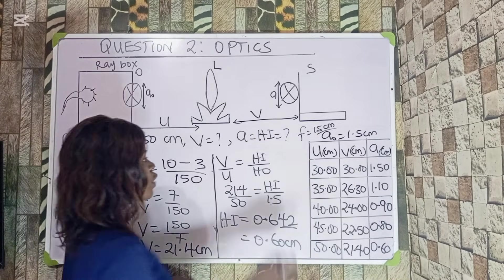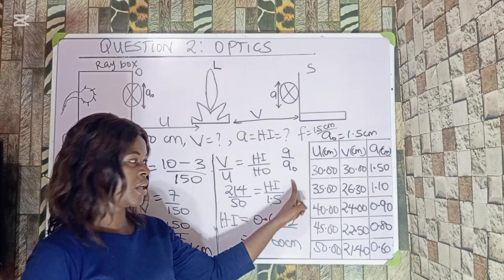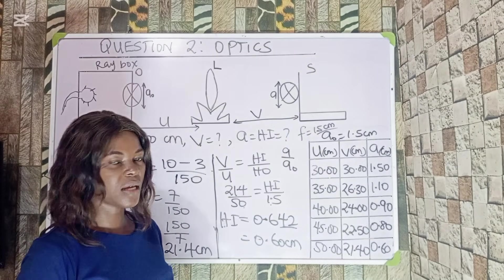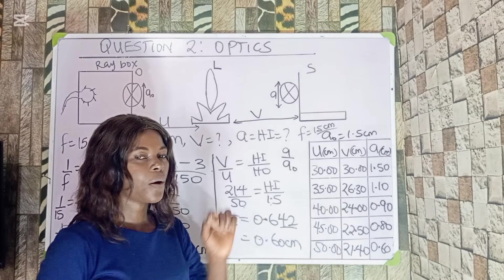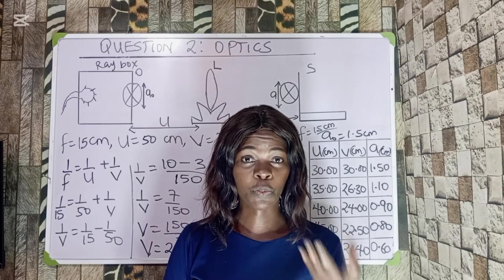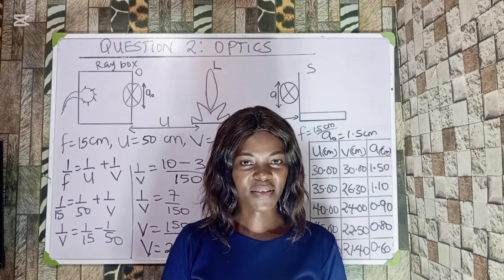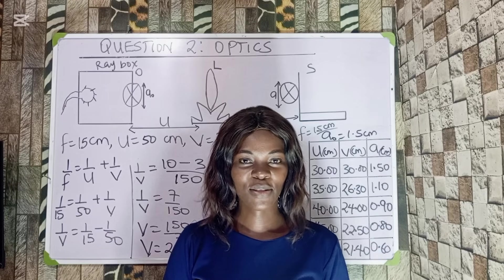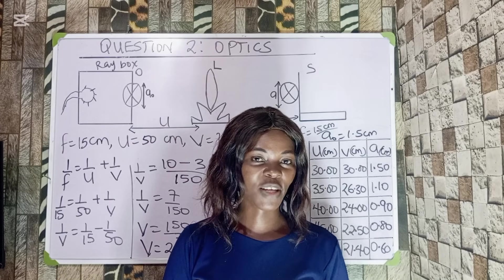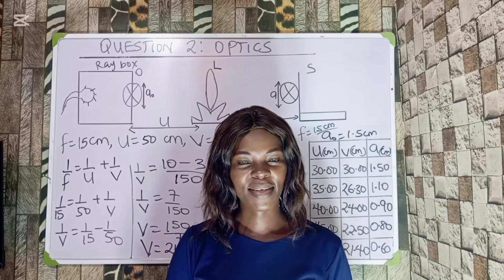From the experiment, we are asked to evaluate a/a₀, so I will add a column for this — this is the magnification. That is how you can obtain your readings for this optics experiment even without touching the apparatus. Please subscribe, turn on notifications, and share this video so that other students preparing for this exam can benefit. See you next time!